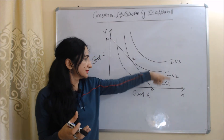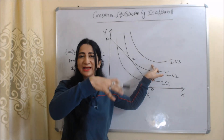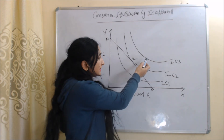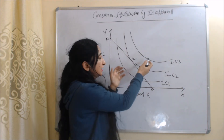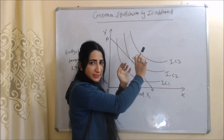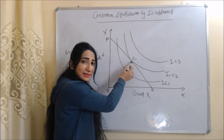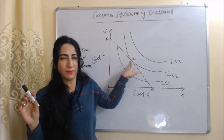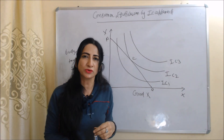We cannot establish equilibrium on IC1 because it is a lower indifference curve. Similarly, we cannot establish equilibrium on IC3 — although IC3 is a higher indifference curve and gives more satisfaction, it lies beyond our budget, so we cannot achieve those combinations. That's why E is our consumer equilibrium point, where our budget and satisfaction are matched. So this is all about indifference curve analysis. Thank you so much for watching this video.